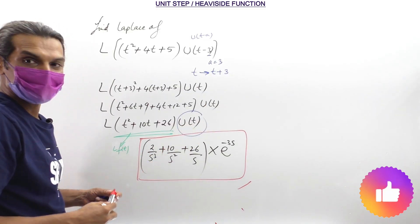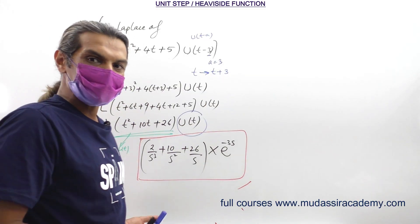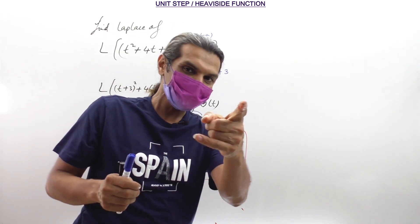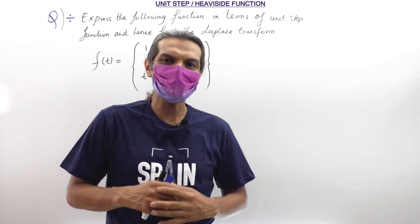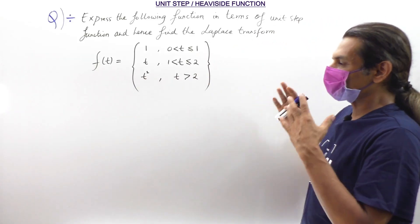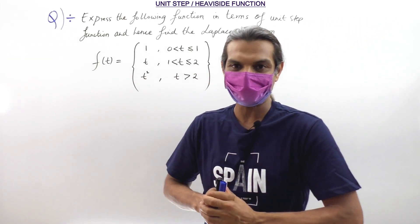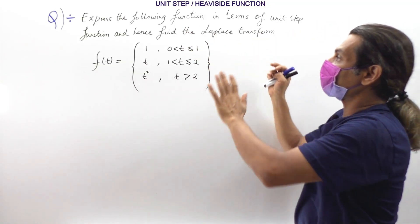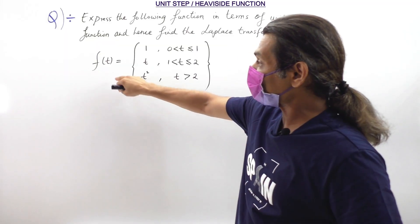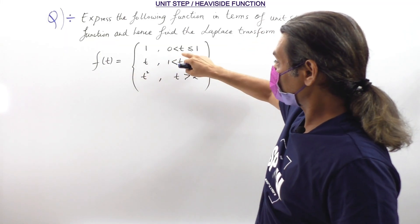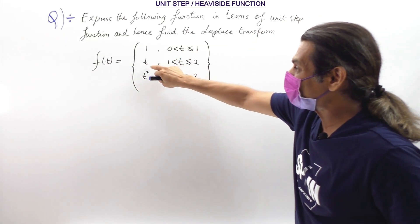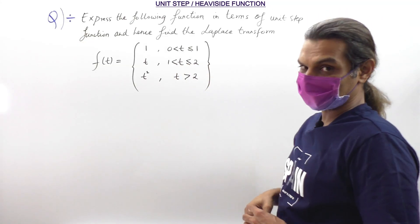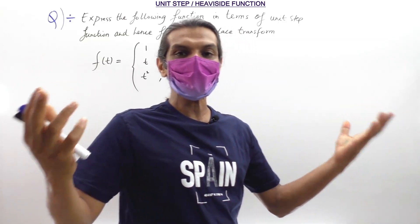I hope you understood the simple concept. Now with this concept, we will apply it to solve the 7-marks exam machine questions. Let's solve a very standard question that has been repeatedly asked many times in the examination. It says: express the following function in terms of unit step function and hence find its Laplace transform. The function is f(t) = 1 for 0 < t ≤ 1; f(t) = t for 1 < t ≤ 2; and f(t) = t² for t > 2.